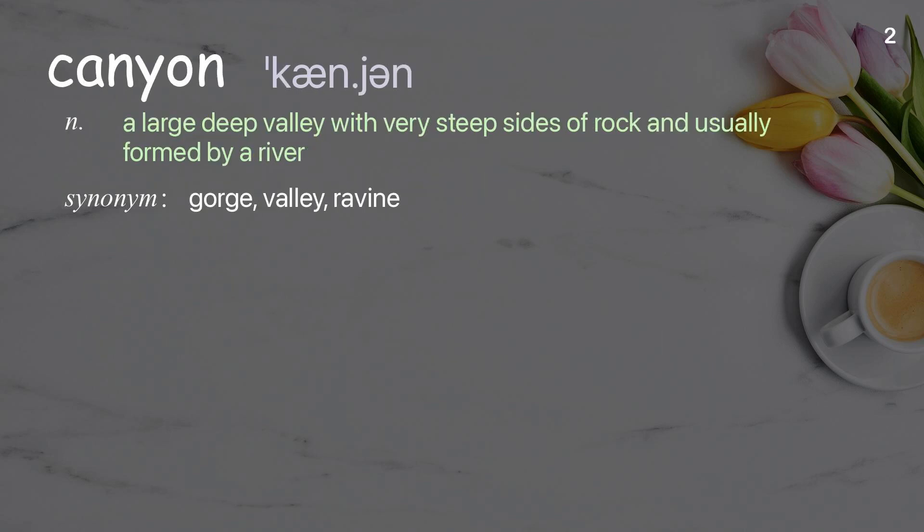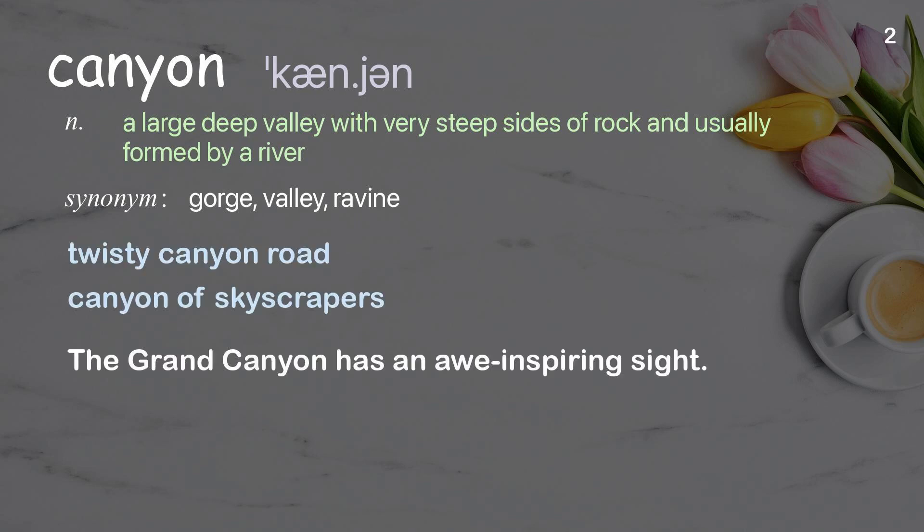Canyon: A large deep valley with very steep sides of rock, usually formed by a river. Examples: Twisty canyon road. Canyon of skyscrapers. The Grand Canyon has an awe-inspiring sight.